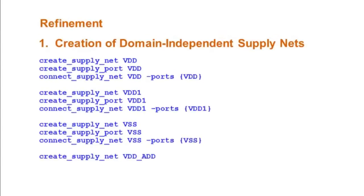The next topic is Refinement. It consists of two stages. First one is Creation of Domain Independent SupplyNets.